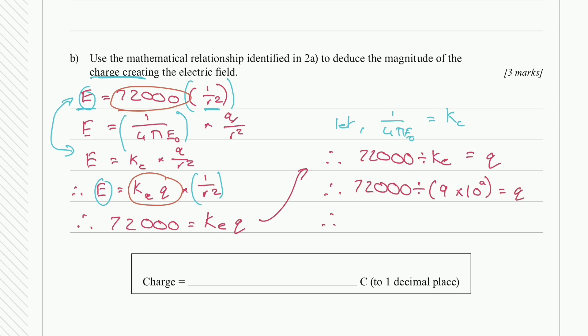We end up getting a q equal to 0.000008. And so the charge in coulombs to one decimal place should be equal to 8.0 times 10 to the negative 6. So we're putting it into scientific notation.